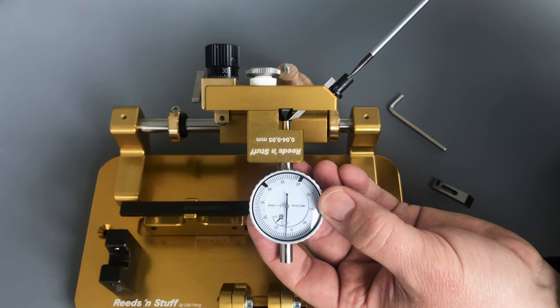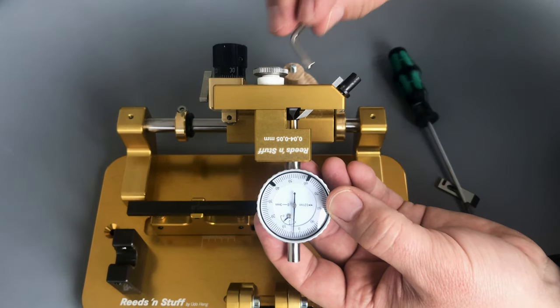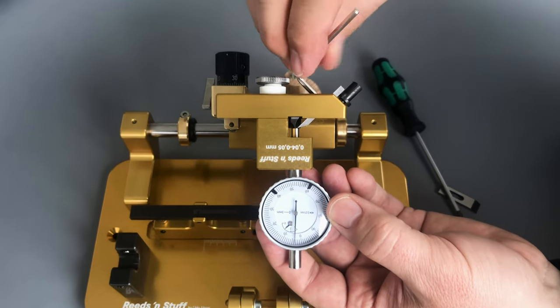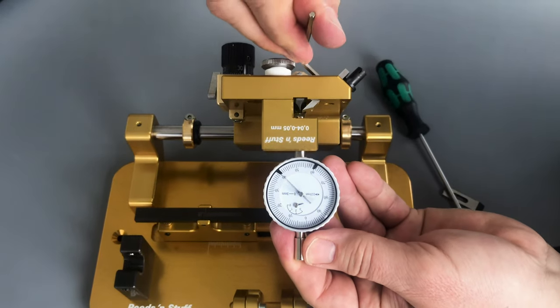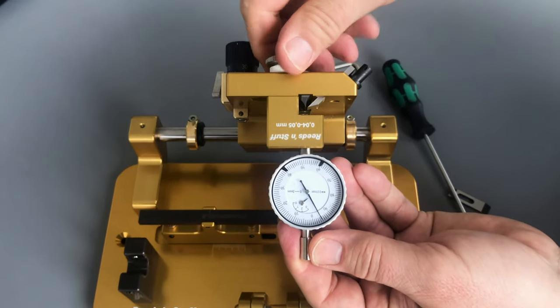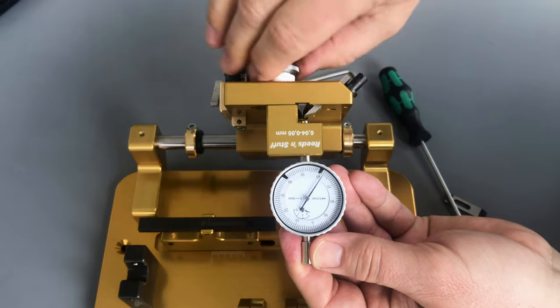So, if this is achieved, we tighten that screw and take off the dial indicator.